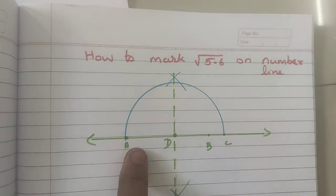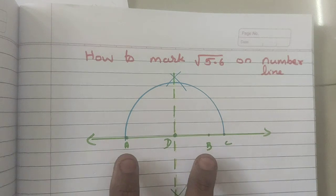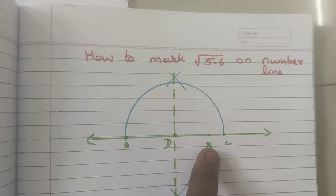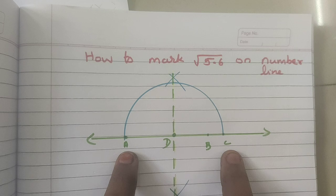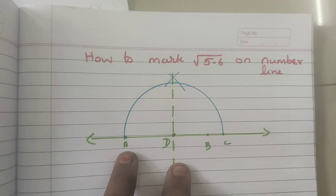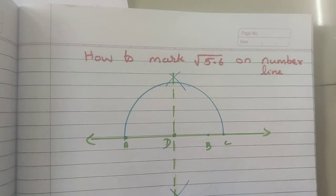First, what we did? We have taken 5.6. Whatever the given measurement, we should take that measurement. A, B is that measurement. Then, from B, mark 1 centimeter. So, now, you should consider A and C. You should find out the centre point of A and C by bisecting. So, now, D is the centre point. With D as centre and D A as radius, mark a semicircle.